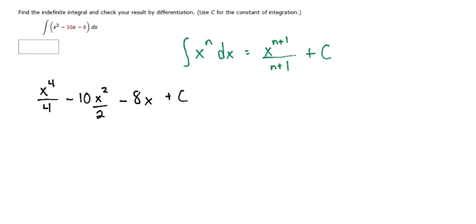So that's the integral, we just need to simplify just a bit. If we have 10 divided by 2, that would be 5, and so this would simplify to x to the power of 4 over 4 minus 5x squared minus 8x plus C.